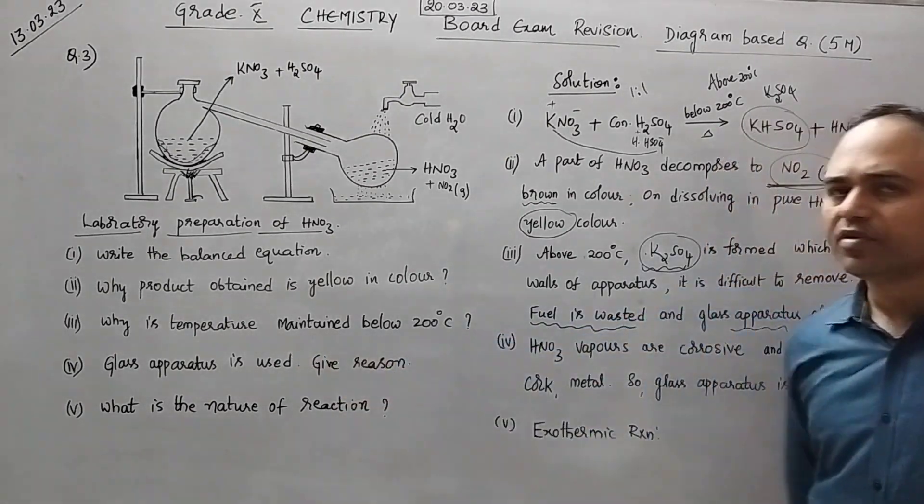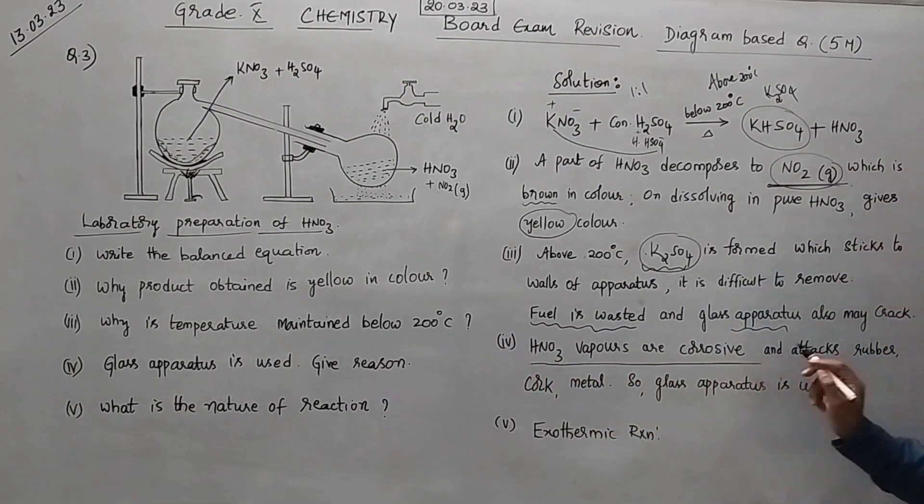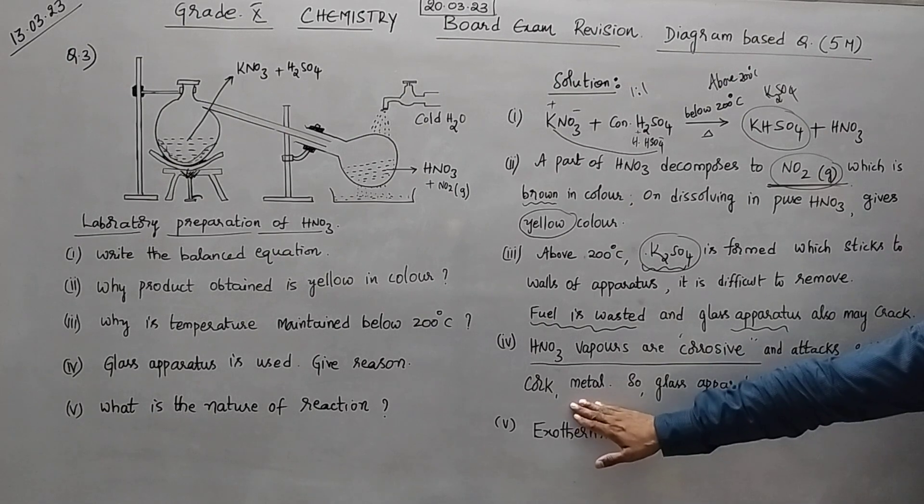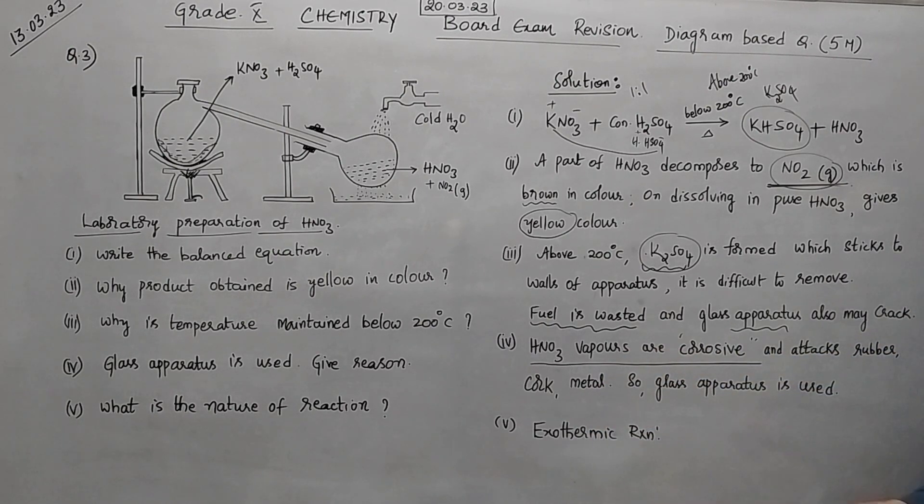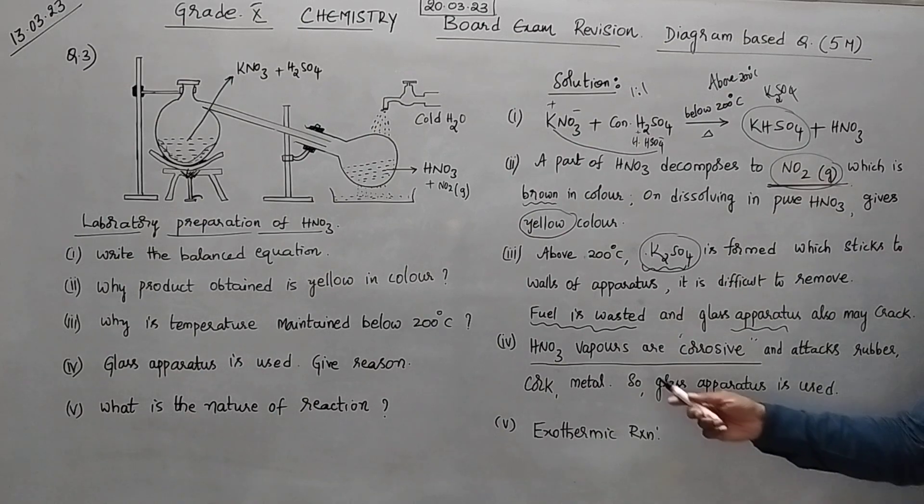Next to fourth one. Why are you using glass apparatus? HNO3 vapors are corrosive in nature. So corrosive in nature. So definitely they will damage or attack if you are using rubber cork or metal. So therefore instead of using rubber or metal we are using glass apparatus. So HNO3 vapors does not affect these glass vapors.